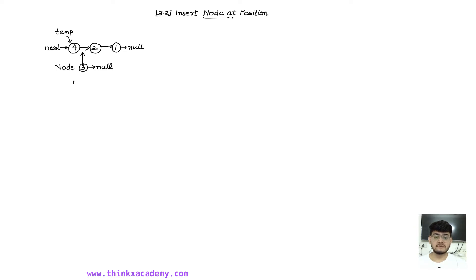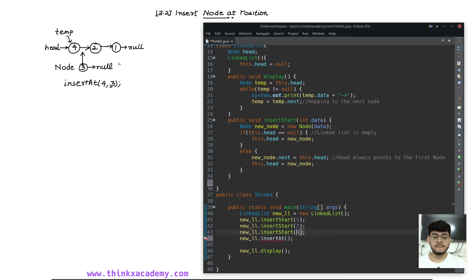I want to make a call to this insertAt function, and I will supply it with two values. First is going to be the position where I want to insert — I will supply the position four. After four, I want to insert three, so I will supply the next data, which is three itself. This is just an integer and we need to pass this integer to the node class. So I am going to pass two variables — four and three.